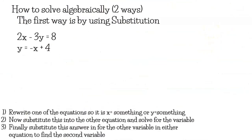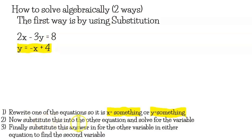The next method is the algebraic method of substitution. Our steps are: rewrite one equation so it's x equals something or y equals something, substitute that expression into the other equation, find what x equals, and finally substitute that answer in for the other variable.